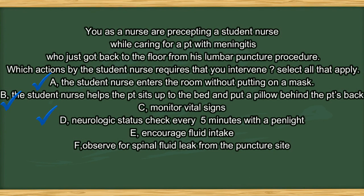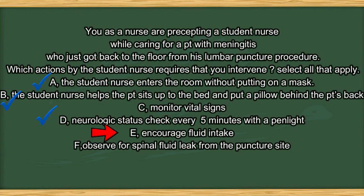The answers are A, B, and D. The nursing student should practice droplet precautions — when entering the patient's room, she needs to wear a mask and goggles. Option B requires intervention because after a lumbar puncture, the patient should lie flat for a few hours instead of sitting up. Option C is correct. Option D requires intervention because the meningitis patient has photophobia — using a penlight to check neuro status every 5 minutes is too frequent and may irritate the patient and cause increased ICP. Option E, encouraging fluid intake, is the right action, so E is a wrong answer to intervene on. Lumbar puncture causes loss of some spinal fluid, and meningitis patients normally have a higher temperature and are at risk of dehydration. Option F, observing for spinal fluid leaking from the puncture site, is the right action and therefore is also wrong to intervene on.